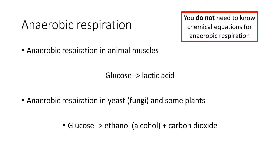In anaerobic respiration, there are two types. The first type occurs in animals and bacteria, and that is when glucose is turned into lactic acid. In that chemical reaction, there is a small amount of energy released. The other type occurs in yeast and some plants, and it's when glucose is converted into ethanol, which is a type of alcohol, and carbon dioxide. Again, only a small amount of energy is released.